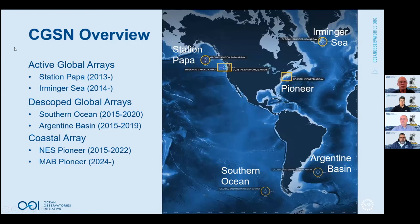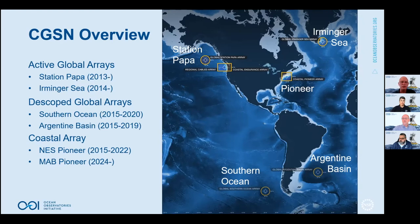As an overview of what we have for CGSN, there are two active global arrays deployed in the global ocean — the Station Papa array on the left-hand side and the Irminger Sea on the right-hand side. These are still operating today, starting in roughly 2013 and 2014 respectively. There are also two decommissioned global arrays in the southern ocean and the Argentine basin, with multiple years of data from both, although they are not currently generating data.